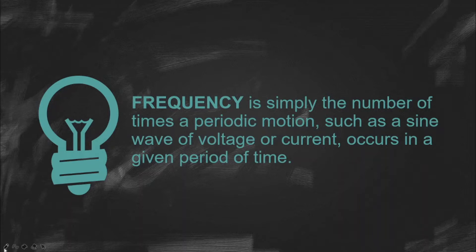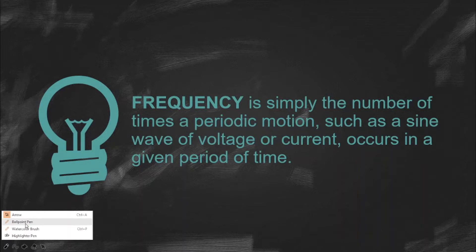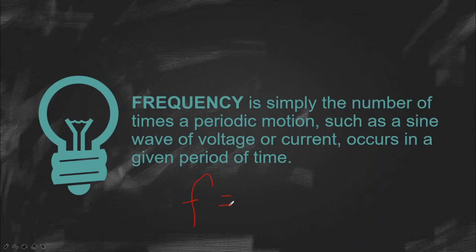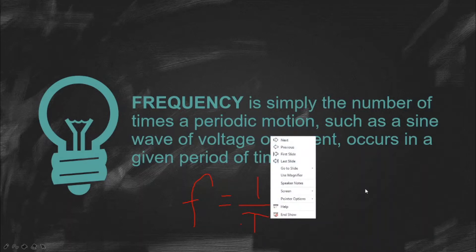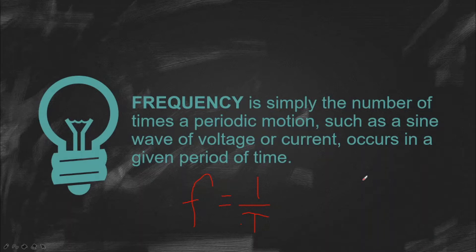Frequency is simply the number of times a periodic motion occurs in a given period of time. The basic unit of frequency is hertz. And isa sa mga formula para makuha ang frequency ay f is equal to 1 over t, kung saan ang t ay period of time.